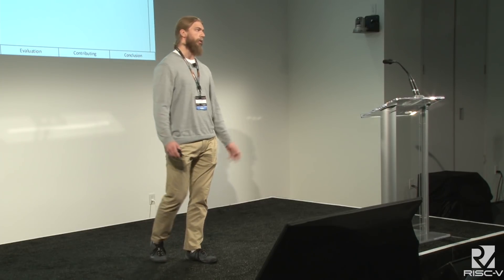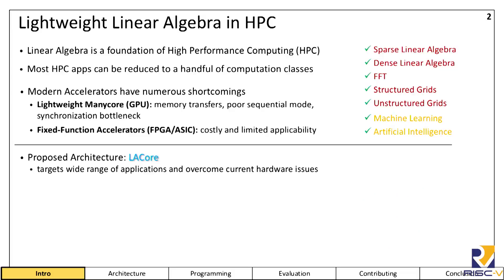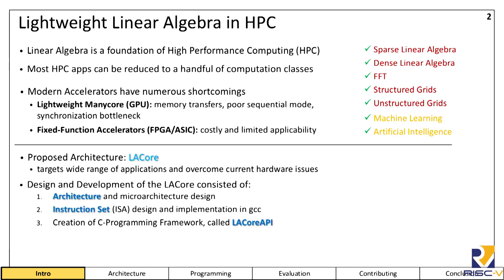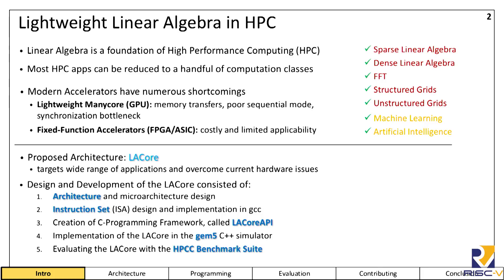To address these problems, we developed the LA Core, which is a high performance computer architecture with the goal of accelerating as broad a range of linear algebra applications as possible, while trying to overcome some of these shortcomings. I'm going to briefly go through the design and development of the LA Core. First, I'll talk about the architecture and the micro architecture, then the instruction set and the implementation in the GCC toolchain. Third, we developed some low-level C programming framework to ease software development. Then we created implementations in the Spike simulator and the GEM5 cycle accurate simulator. And last, we implemented the HPCC benchmark suite and compared it to a few other reference implementations.